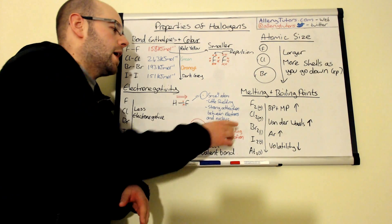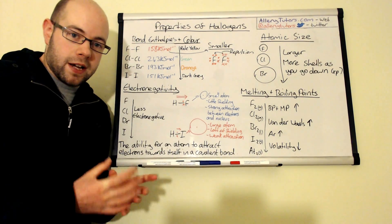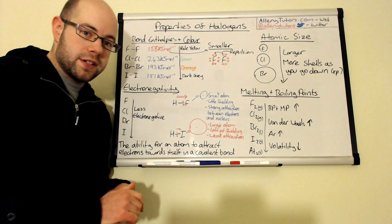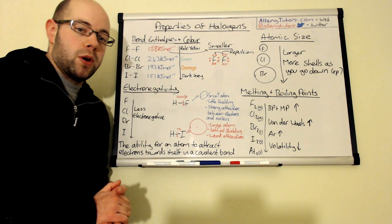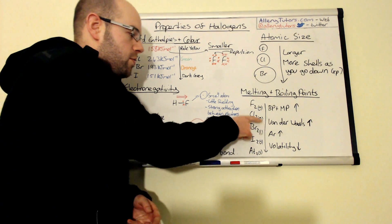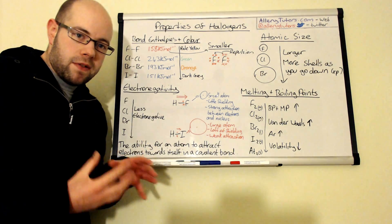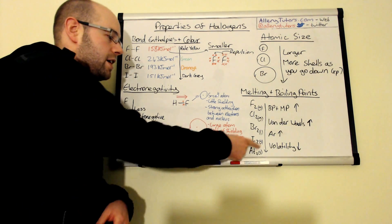But as we go down the group the van der Waals increases and the boiling and melting points increase so bromine's a liquid at room temperature and then by the time you get to iodine and astatine the van der Waals forces are so strong that actually these elements are solids at room temperature and pressure.